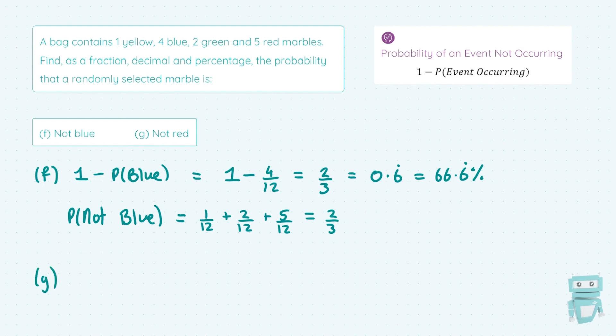Let's apply it then to part G, the probability of selecting a not red marble. Well, it's just going to be 1 minus the probability of the event happening. So it's the 1 minus the probability of choosing a red one. So that's going to be 1 minus 5 out of 12 reds. So 1 minus 5 over 12 is 7 over 12. And then I simply type that in my calculator to change it to a decimal. So I'm getting 0.583 with a recurring on the 3 and times it by 100 to get our percentage. It's 58.3 recurring percent.